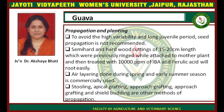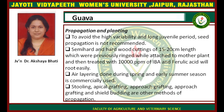To avoid high variability and long juvenile period, seed propagation is not recommended. If we use seed as propagation, there is a lot of variability and the juvenile period is extended, so fruiting is very late. Instead, we use semi-hardwood to hardwood cuttings of 15 to 20 cm length, treating cut ends with 1000 ppm IBA or indole butyric acid. Air layering during spring and early summer season can also be used as propagation.